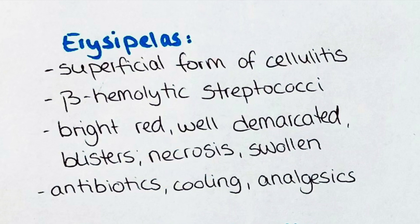Erysipelas presents as a bright red rash with clear demarcation. Some patients present with blistering of the affected area that can lead to necrosis. The skin is usually also swollen, which is another difference from cellulitis. The treatment of choice is antibiotics as well as cooling of the affected area to reduce swelling and inflammation. Analgesics can be given to alleviate pain. If the patient is not treated properly, abscess, gangrene, and dissemination of the infection to other organs can be the result.